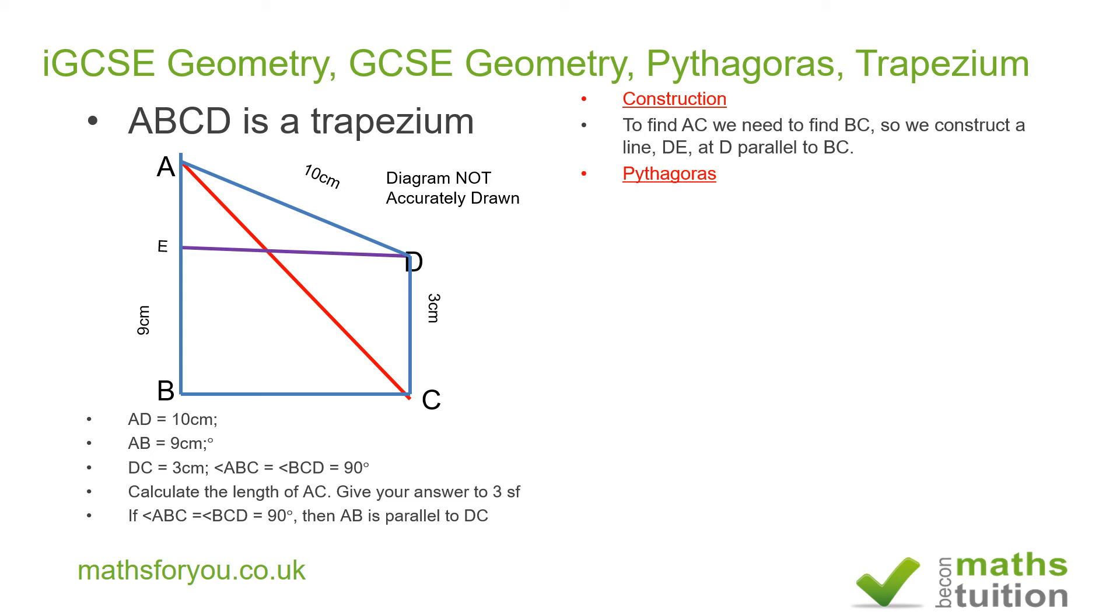We now have to use Pythagoras to find the line DE because DE is not equal to BC. For Pythagoras we know that DE² equals AD² minus AE². DE² then becomes 100 minus 36 because 10² is 100 and 6² is 36.